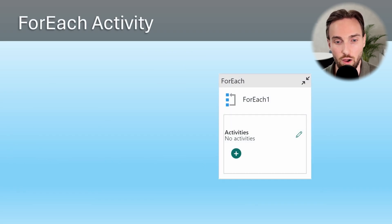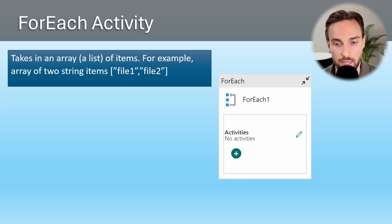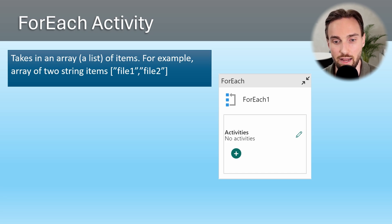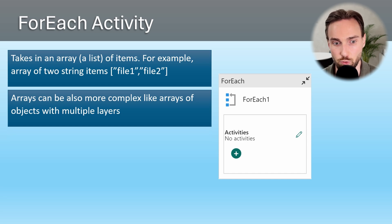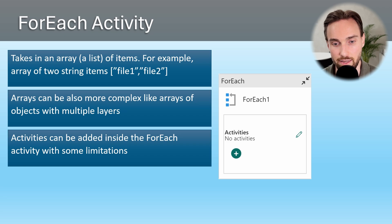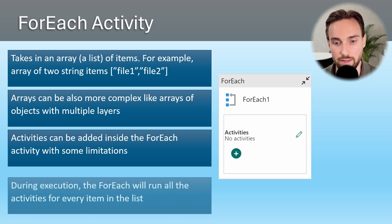Now let's take a closer look at how the ForEach activity works. Here we can see how the ForEach activity looks in the data pipeline UI. It is an activity that takes in an array of items — for example, a simple array of strings. These arrays can also be much more complex, like arrays of objects with multiple layers, allowing you to build very powerful configuration-based logic in your pipelines. The ForEach activity wraps other activities, meaning activities can be added inside it with some limitations. When the ForEach activity executes, it runs all the inner activities for every item in the list.